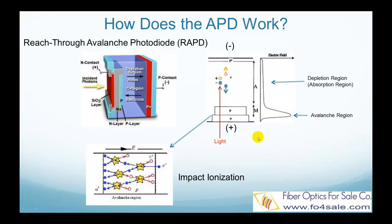Now let's see how the avalanche process works. The light enters through the N+ and the P region, and is absorbed in the pi region, and generates a free electron-hole pair. Under the electric field in the depletion region, the negatively charged electron drifts towards the anode, and the positively charged hole drifts towards the cathode. Since there is no avalanche region on the P+, no avalanche process happens to the hole.